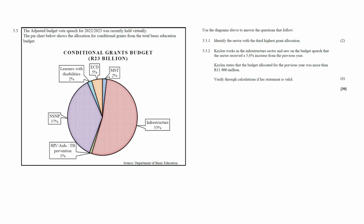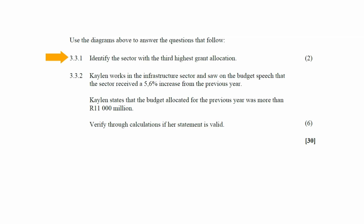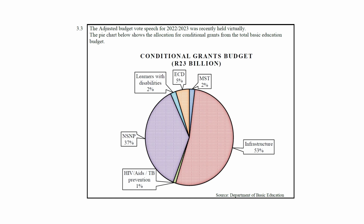Question 3.3 consists of two data handling questions assessing your understanding of pie charts and budget allocations. The adjusted budget vote speech for 2022–2023 was recently held virtually. You are given a pie chart showing the allocation for conditional grants from the total basic education budget of 23 billion rand. In question 3.3.1, the third highest grant allocation is ECD, after Infrastructure in first place and NSNP in second.